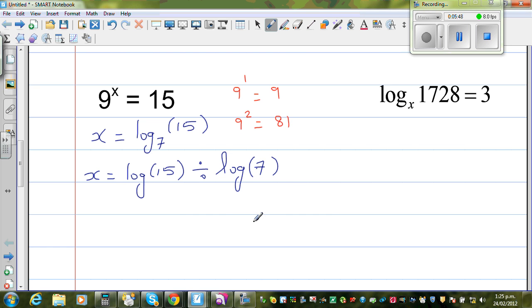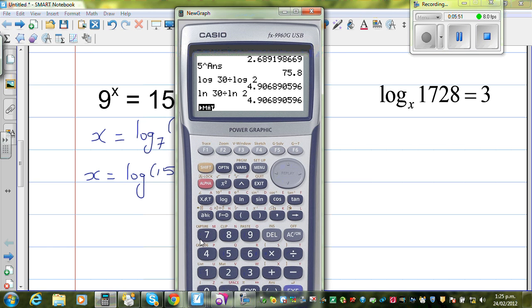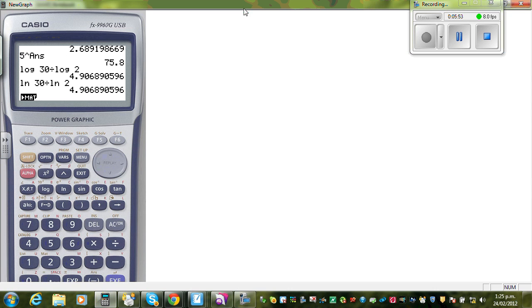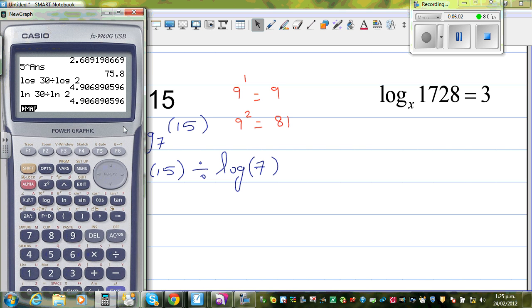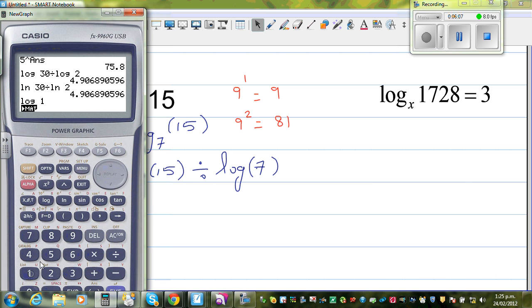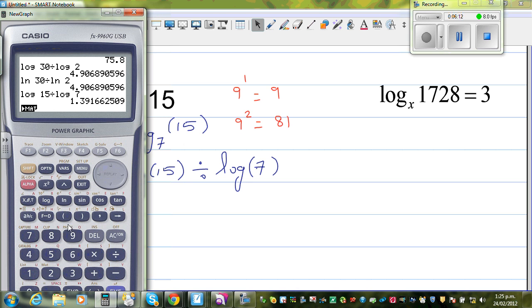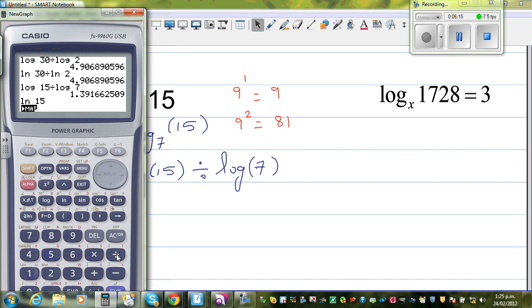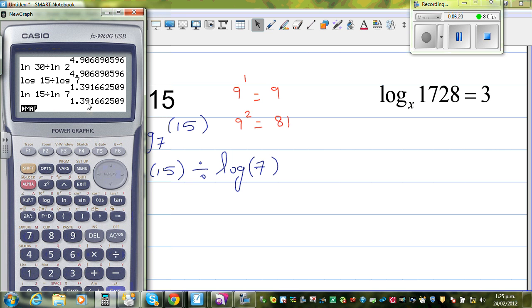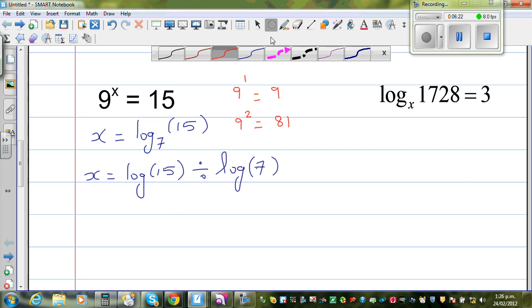Let us check that. This is log 15 divided by log 9, or natural log of 15 divided by natural log of 9 will also give you the same number. So it's 1.39 in two decimal places. X is 1.39.